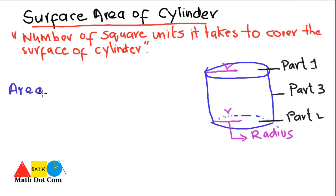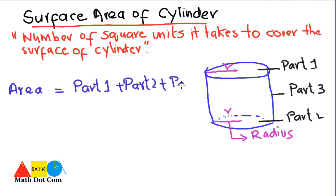So let's see how we can find the surface area of a cylinder using these three parts. The total area consists of the sum of part 1 plus part 2 plus part 3. By putting the values in one by one, we can easily find the surface area of the cylinder.